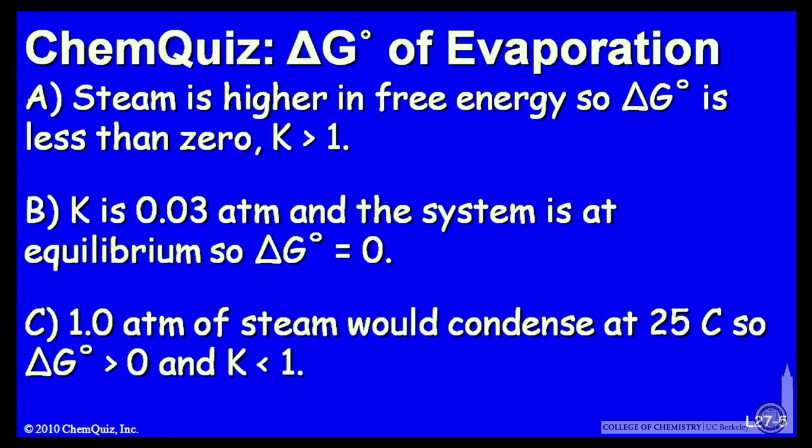Let's look at a possible explanation for each answer. A, steam is higher in free energy, so ΔG° is less than zero and K should be bigger than one. B, K is 0.3 atmospheres and the system is at equilibrium, so ΔG° is zero.